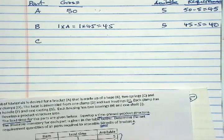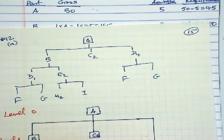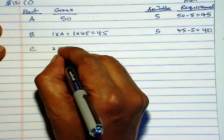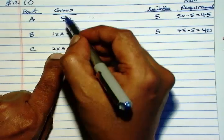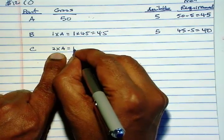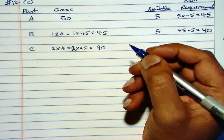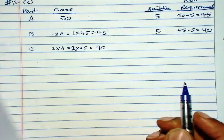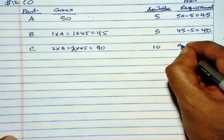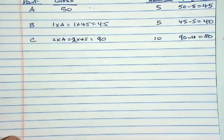Next is C. How many units of C do we need for each A? We need 2 units for each A. So this is 2 times A. Again, net requirement of A. Don't take the gross requirement and multiply it. You need to go to the net requirement. So 2 times 45 is 90. And C, we have 10 units available, so 90 minus 10 is 80. 80 is the net requirement for C.